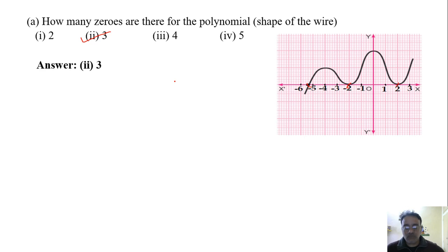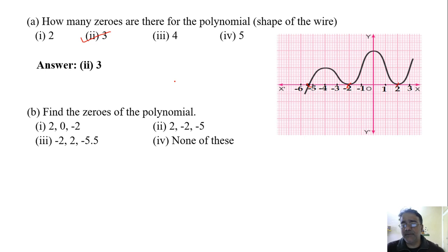The next question: find the zeros of the polynomial where it intersects the x-axis. Minus 5, minus 2, or 2? Actually, it's not exactly minus 5 because it's in between minus 5 and minus 6. That is minus 5.5, minus 2, and 2. So the third option is the correct option.